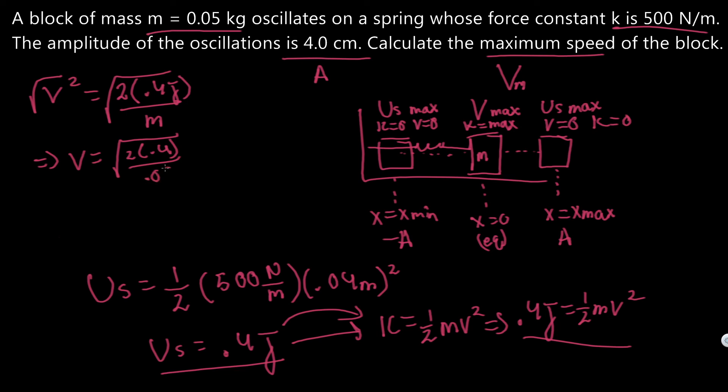Let's put that into the calculator. Square root of 2 times 0.4 divided by 0.05, we get the answer of 4, usually in meters per second for velocity.